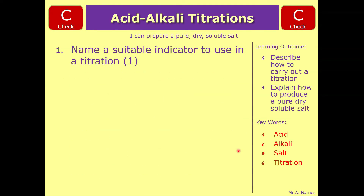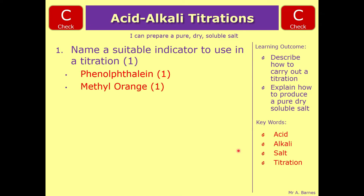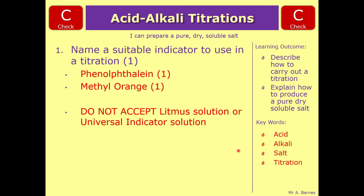Let's see how you've done. Question one — name a suitable indicator to use in a titration. The one we're looking for is phenolphthalein. I would also accept methyl orange, although I'd prefer you to remember phenolphthalein as it has the clearer endpoint. You would not get a mark for litmus solution or universal indicator solution — neither of those is accepted for a titration.